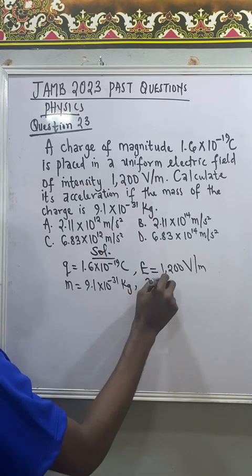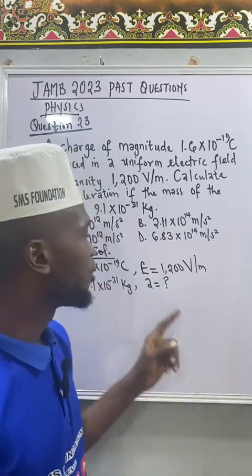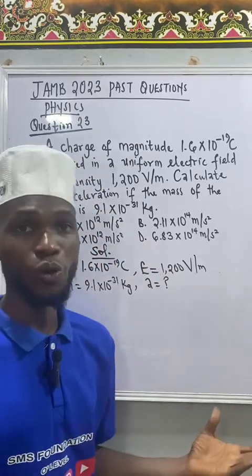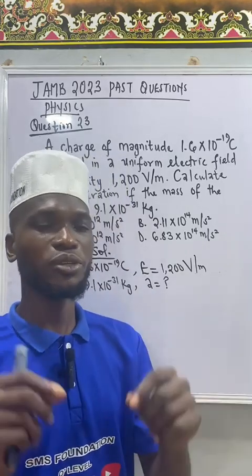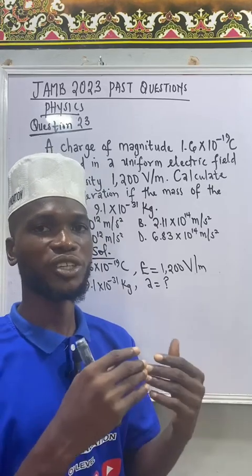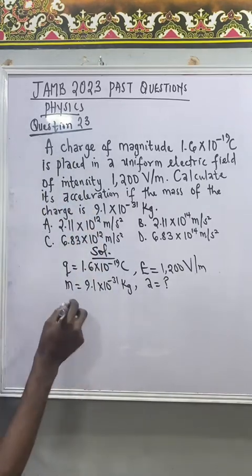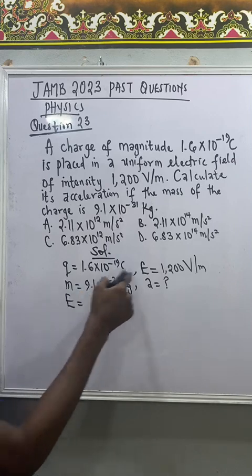Now first of all we can use the formula of electric field intensity to do the whole work. What is electric field intensity? Electric field intensity at a point in an electric field is the force per unit charge at that point. So from that definition we are able to derive that electric field intensity equal to f over q.